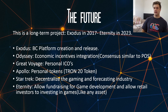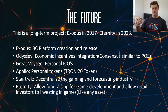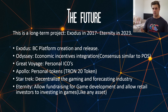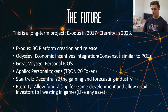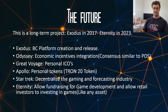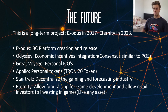Phase two is economic incentive integration. This is basically to do with their nodes and giving the nodes on the network economic incentive. The platform uses a consensus algorithm which is similar to proof of stake. Number three is Great Voyage — basically where you'll be able to host your own personal ICOs, just like I mentioned before with the main goals.